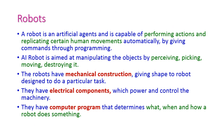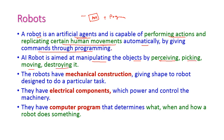A robot is an artificial agent which is capable of performing actions and replicating certain human movements automatically by giving commands through programming. A robot is a combination of architecture plus program. Robot is aimed at manipulating objects by perceiving, picking, moving, and destroying the objects.